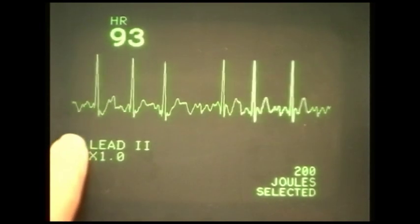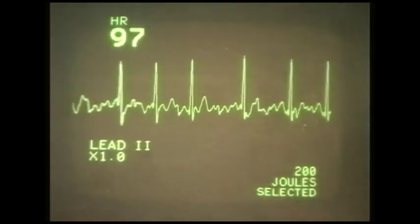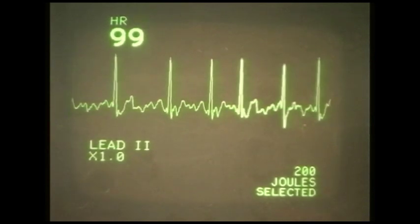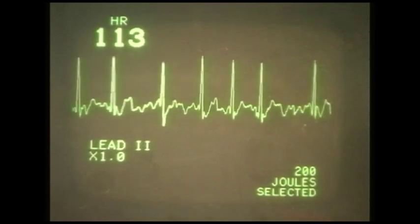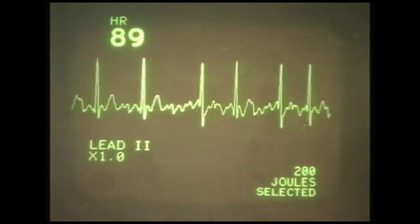And what does this lead 2 signify? So that's the lead, the position that we're actually looking at the rhythm from. We have, so this is limb lead 2. And this is the amplitude that we're actually, or the gain that we're looking at underneath.